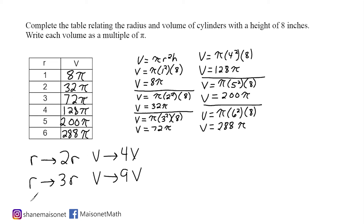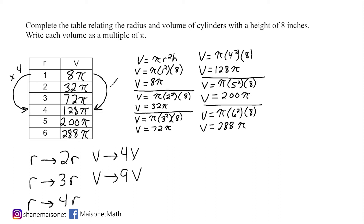Let's check what happens if we make the radius 4 times as large. The only numbers we can compare on this table are 1 and 4. If we make the radius 4 times larger, the corresponding outputs go from 8 to 128, and that is 16 times larger, so our volume becomes 16 times what the original volume was.